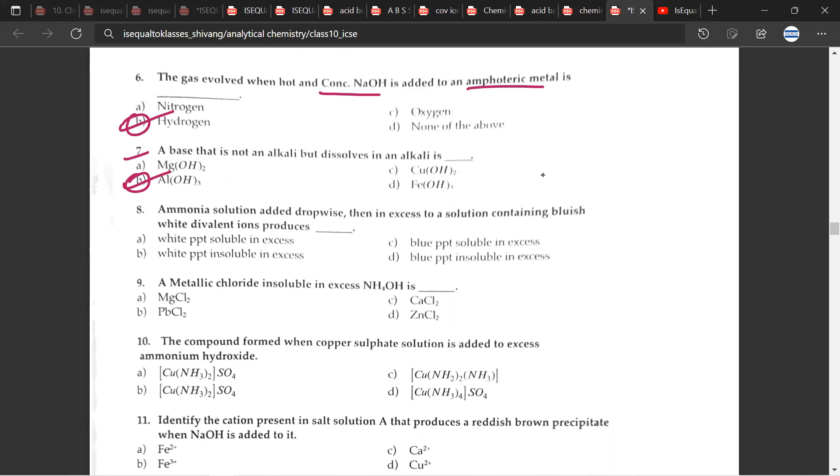Ammonia solution added dropwise when in excess. So over here, many people, like I have observed that many of my friends and students also have this question that what exactly is an alkali? So, alkalies are basically bases that are soluble in water. They are basically bases that are soluble in water. And note that if these are bases, then alkali is just a part of it, it's just a subset of the whole base. So all alkalies are bases, but not all bases are alkalies.